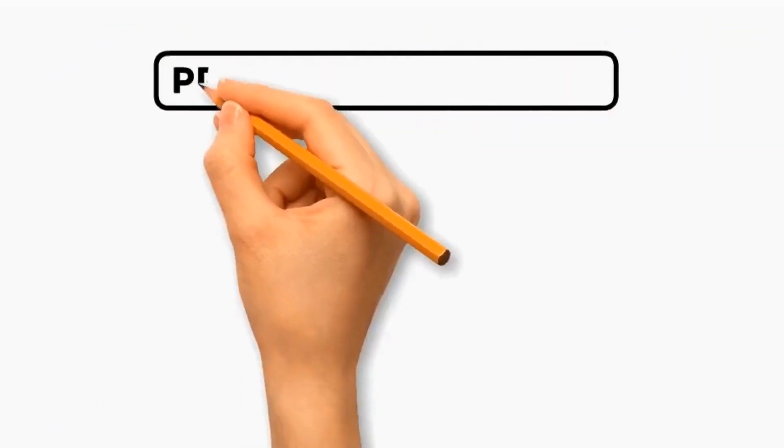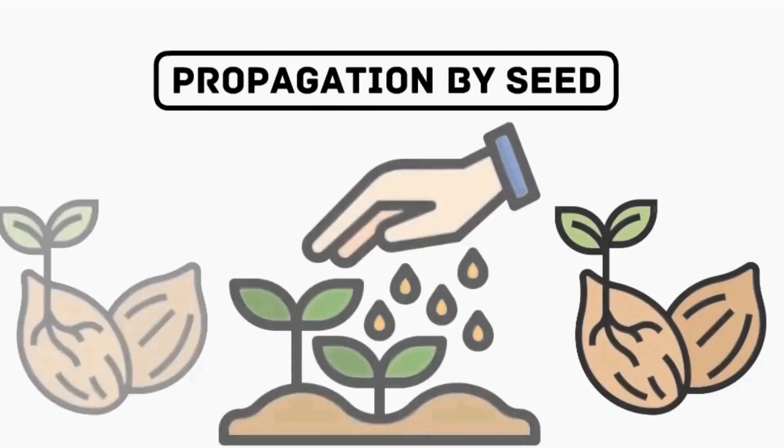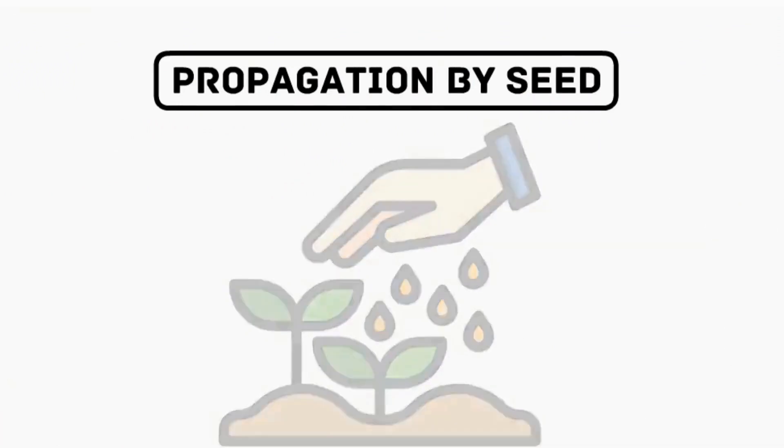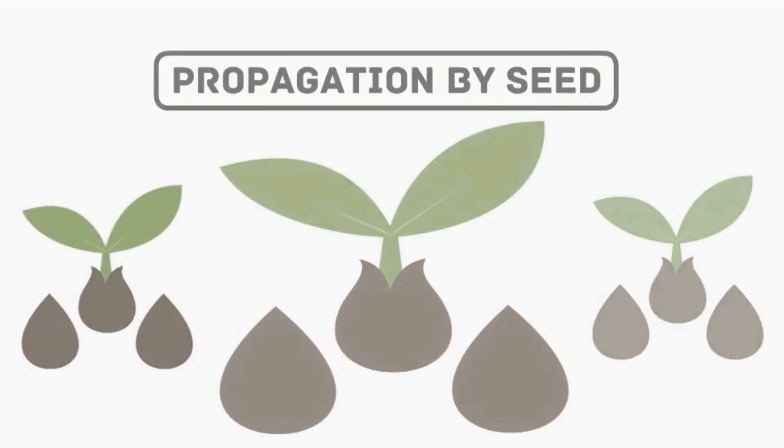Number three: Propagation by Seeds. Sow the seeds in a well-draining seed-starting mix and provide light. It requires more time and patience to propagate spider plants by seeds.